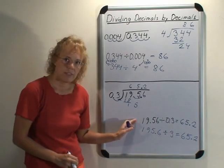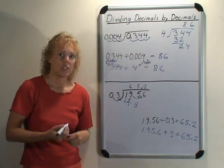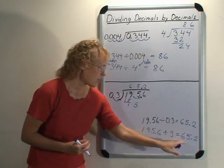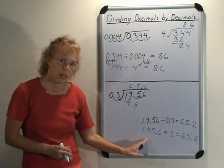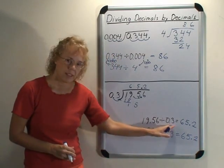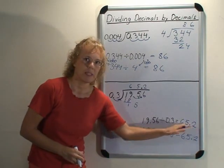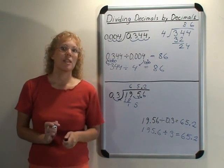So both the dividend and the divisor got multiplied by 10, and that does not change the answer. 3 goes into 195.6 that many times, and similarly 3 tenths goes into this number the same amount of times. We're going to look at this principle a little more in a bit.